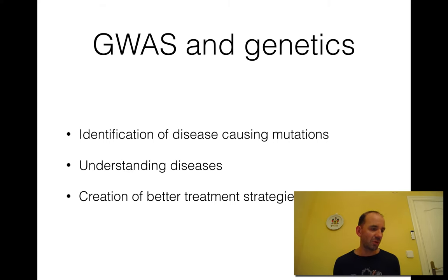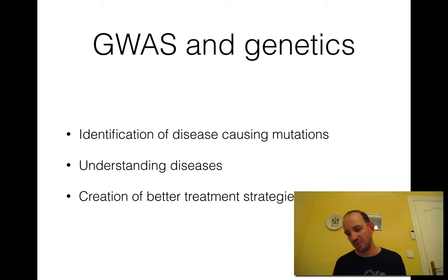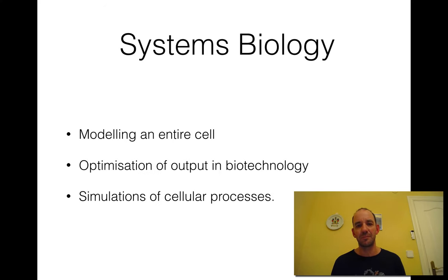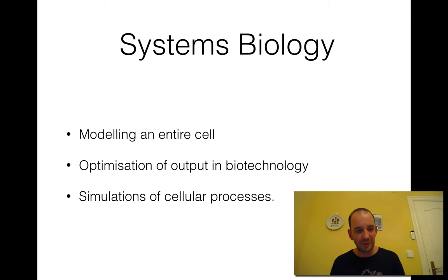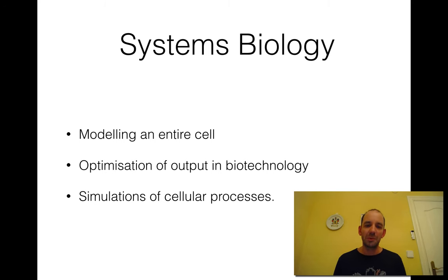We can also use genome data to identify mutations — taking groups of people that are sick versus not sick and asking what are the mutations and what are the causes of those mutations. And of course we use this for creating better treatments. We can also use our complete understanding of the genome — since the genome is complete information, we know what is in the cell — to start modeling entire cells. This can be used not only for understanding the biology of the cell, but also for optimizing a cell.